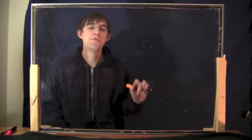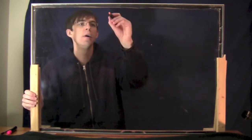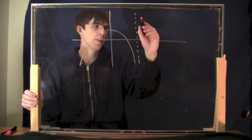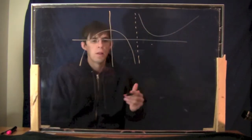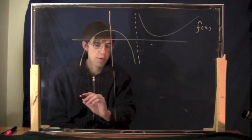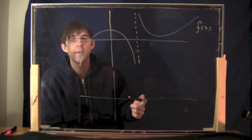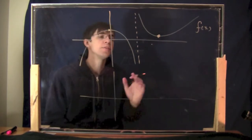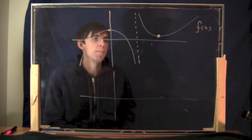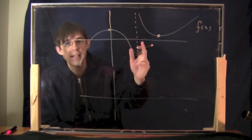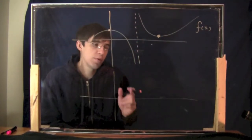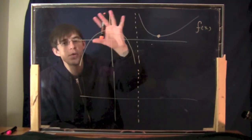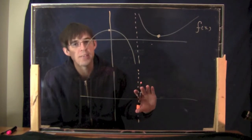I want to do two more examples of graphing the derivative with more interesting, more weird functions. Here's one — let's try something like this. This one has a vertical asymptote, and that's what's going to make this one exciting. This is my function. I'm going to draw a graph of the derivative. It's a good idea to start off by doing the same thing we did before, which is mark off the places where the derivative is zero. Here's one, here's another one, and that's about it. Something interesting is going to happen right here. It turns out a vertical asymptote in the function will always produce a vertical asymptote in the derivative also.